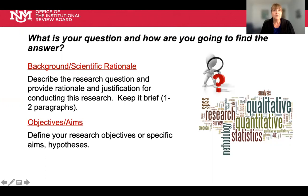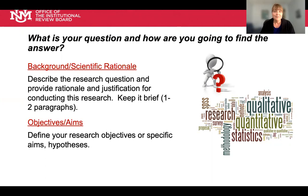In the protocol, you want to start with: what is your question and how are you going to find the answer? We have a background and scientific rationale section where we want you to describe your research question and provide the rationale for conducting the research. This is not a scientific publication nor is it your dissertation, so please keep this section brief, usually limited to one to two paragraphs. We also want you to define your objectives and aims for the study — your specific aims or your hypotheses.